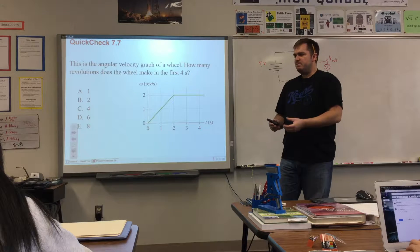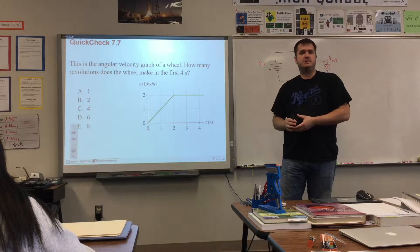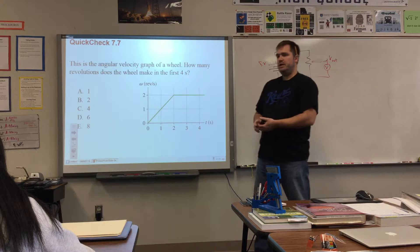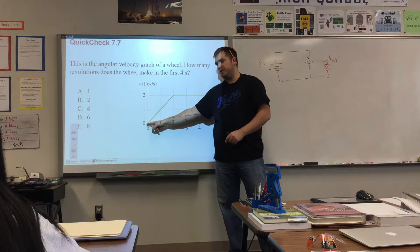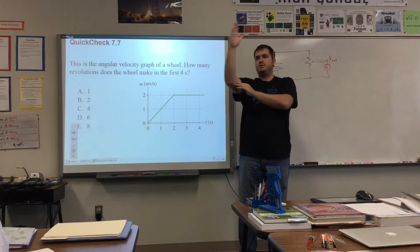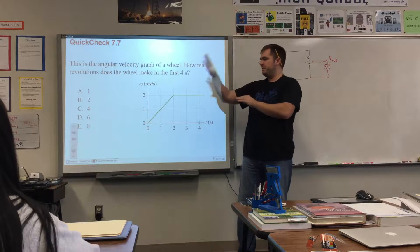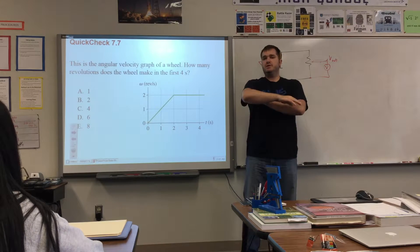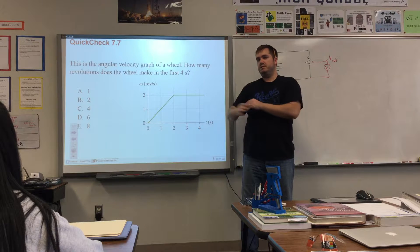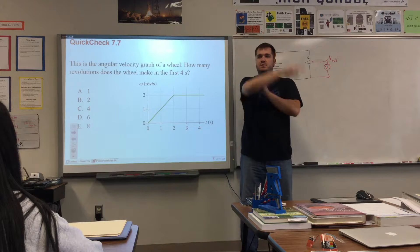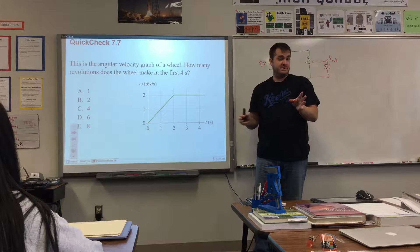A better question might be: is the wheel rotating clockwise or counterclockwise? The answer is counterclockwise because omega is positive. It starts off at zero rotations and during the first two seconds it goes faster and faster in a positive direction, then from two seconds onward the angular velocity stays constant.